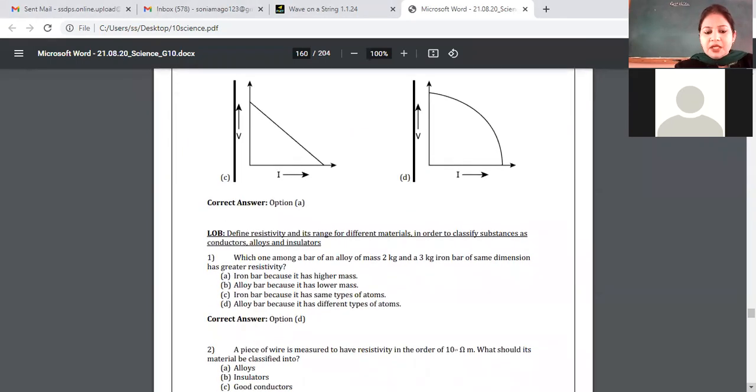Second question: A piece of wire is measured to have resistivity in the order of 10 raised to 19 ohm meter. What should this material be classified into? Alloys, insulators, good conductors, or semiconductor? Fourth option is semiconductor.